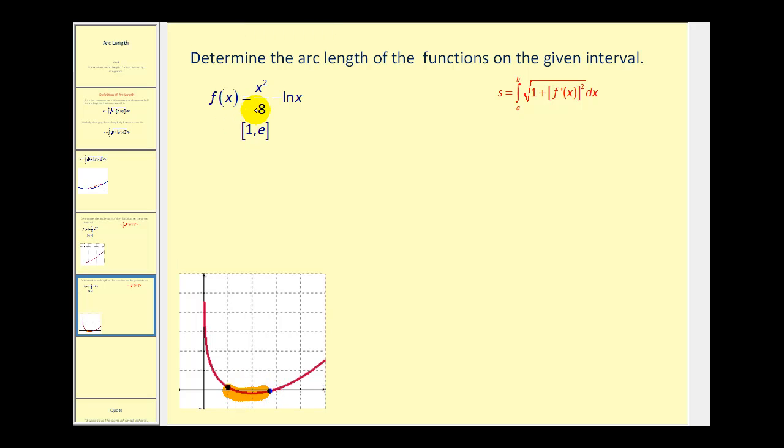So the first thing we're going to do is find the derivative and then square it. Well, the derivative of x squared divided by eight, we multiply it by two and then subtract one from the current exponent. That would be one-fourth x minus one over x. Now we have to square this.